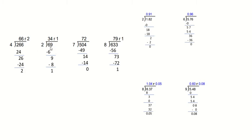Moving to the next problem: can the 2 go into the 6? Yes, 3 times. 3 times 2 equals 6. Write the 6 there and subtract — 6 minus 6 equals 0. We bring our 9 down. How many times does 2 go into 9? It goes in 4 times. 4 times 2 equals 8. Write the 8 under the 9 and subtract — 9 minus 8 equals 1. So 69 divided by 2 is 34 with a remainder of 1.